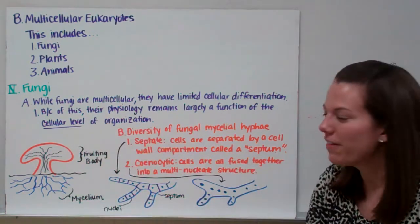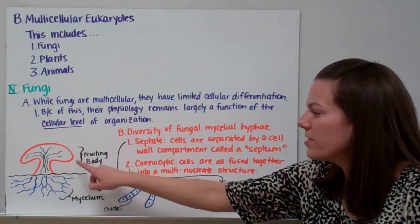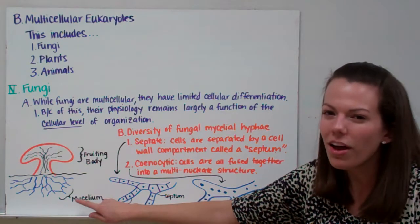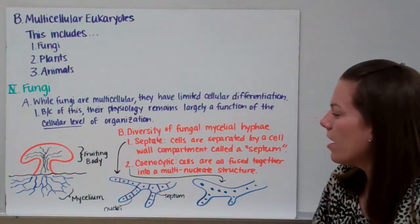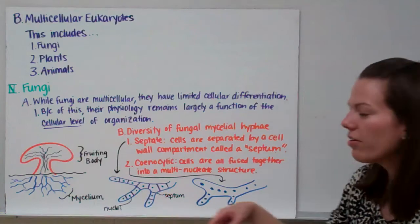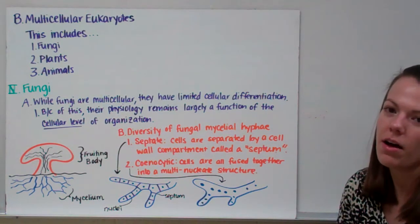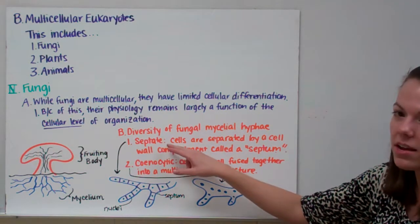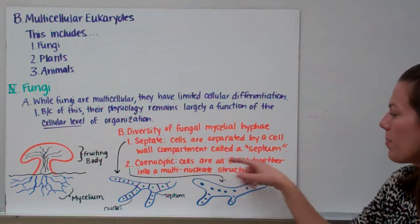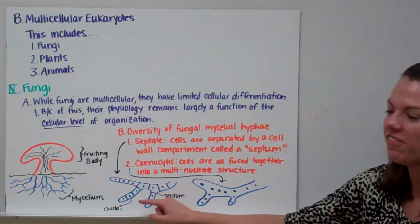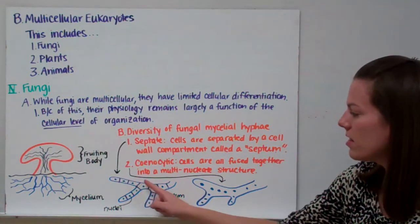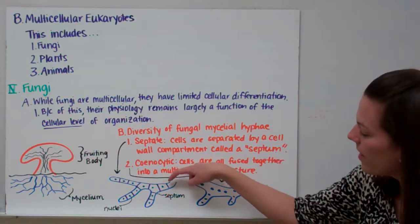Here is a diagram of a fungus. The top part is the fruiting body, and underneath in the soil we see the mycelium — somewhat equivalent to roots. The diversity of fungal mycelial hyphae is one thing that differentiates fungi from each other. Septate mycelial hyphae have cells separated from one another by a compartment called a septum. In this example, the small blue dots are the nuclei, and the purple part is the septum separating each individual cell, with a cell wall on the outside.